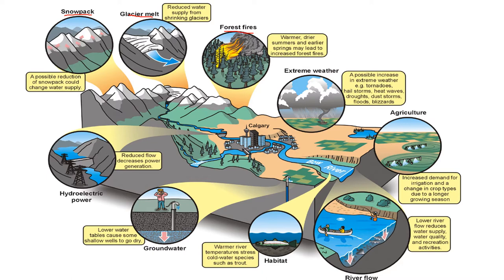Extreme weather is something that is potentially going to affect the UK in quite a significant way, because the UK tends to have fairly mundane weather. It can be a little bit unpredictable, but we don't get extremes of wind, rain, or heat — we tend to have quite a temperate climate. Temperate means not extreme. But that could potentially change with changes to the climatic system caused by global warming and increasing average global temperatures.